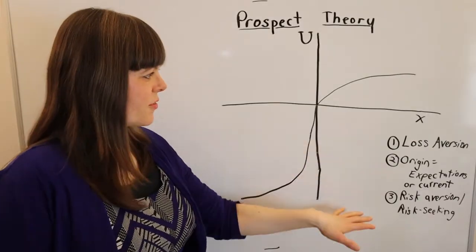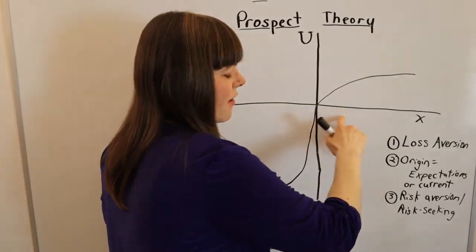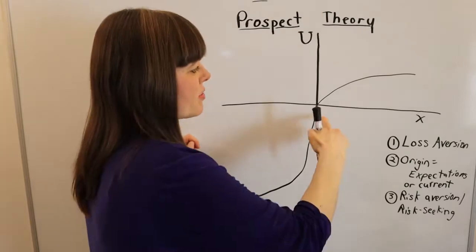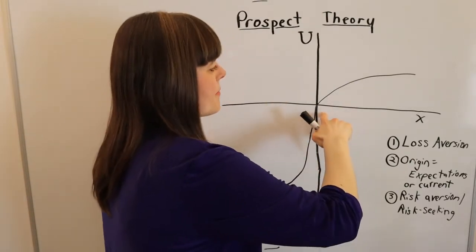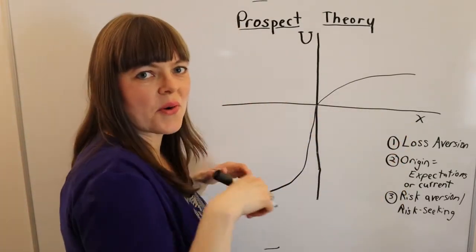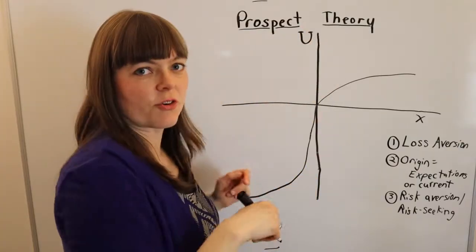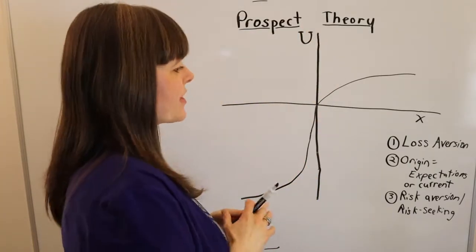So those are the three things. And I should mention, on this axis, oftentimes you have money, but really it's anything. This could be number of houses you own, number of ice cream cones, and this is just the y-axis versus just your utility over those things.